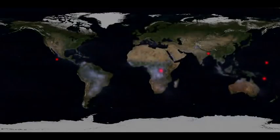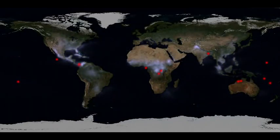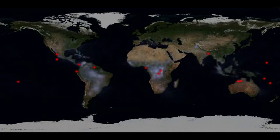These dots mark TGFs observed by Fermi's gamma-ray burst monitor during the spacecraft's first eight months of operations. Researchers estimate that there may be as many as 500 TGFs each day.